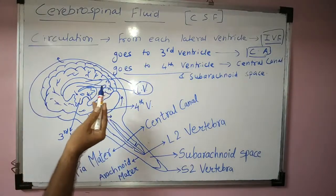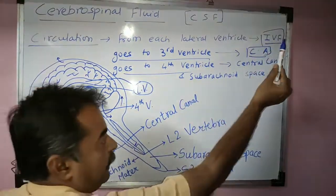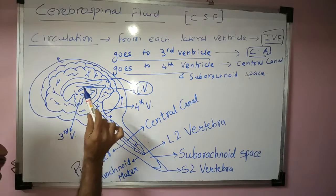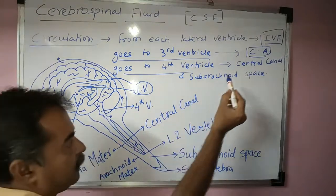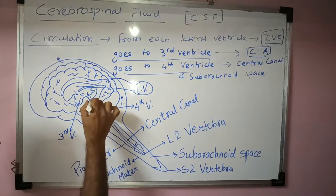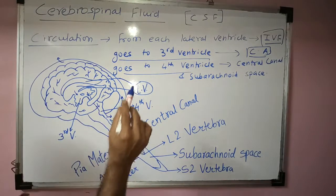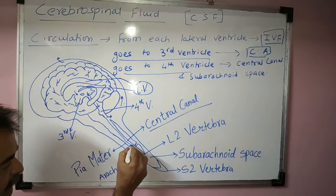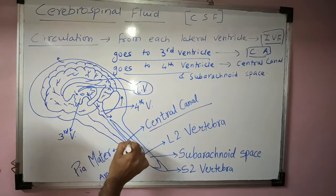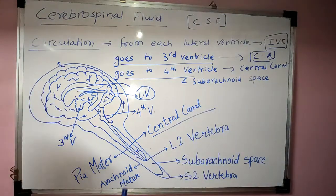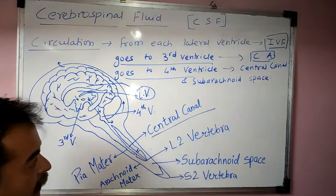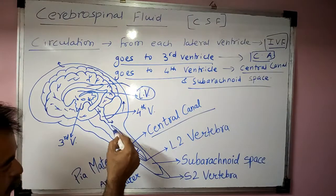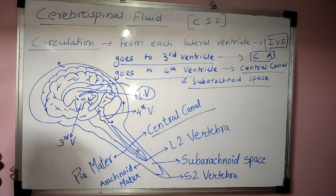From the fourth ventricle, CSF goes into the central canal and the subarachnoid space. There are three apertures in the fourth ventricle: a median aperture and two lateral apertures. This arrow in the figure shows the median aperture, called the foramen of Magendie.